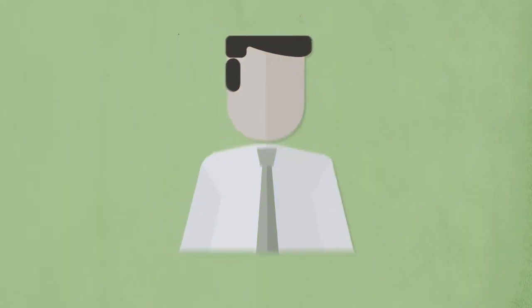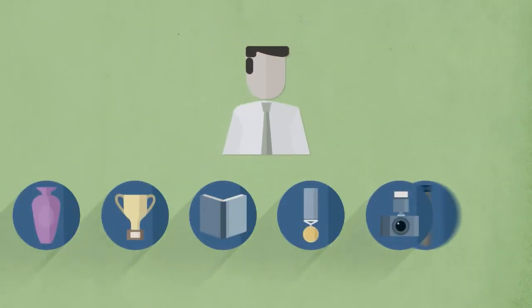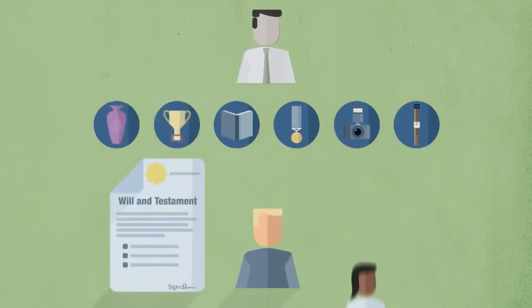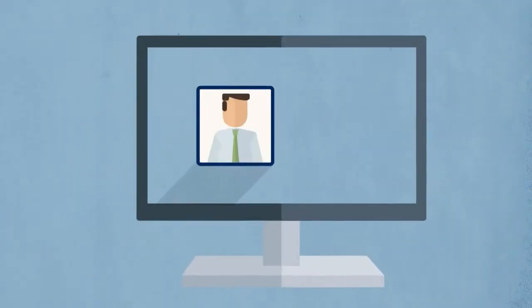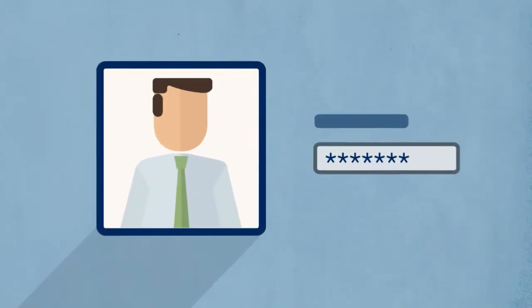Following a death, physical items belonging to a person can be passed on to family and friends, and instructions on what items should be given to whom are usually specified within a will. But what about items that are stored online?